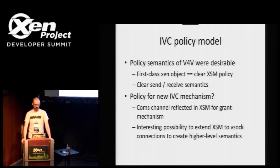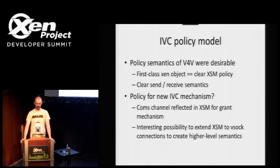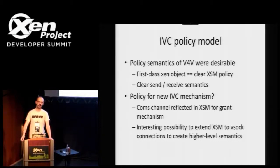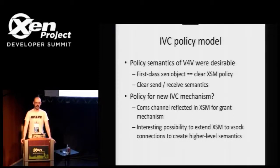Our concern is that the policy for the new IVC mechanism have similar properties — not necessarily exactly the same, but such that you can look at the policy and see the communication. The comms channel set up using the front/back model has been a bit of a problem for us when writing policy to define interactions between front and back device model interfaces for disaggregated things like the network driver VM. You can see the creation of shared memory and events, but the problem is knowing what's actually being done over them. It's pretty easy to infer communications between net front and net back if the net back is in the driver domain, but it's difficult to separate the two things when Dom0 provides both net and block.